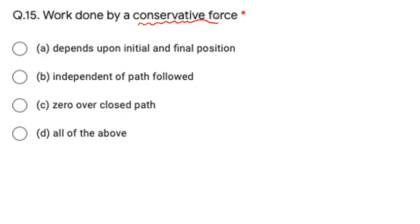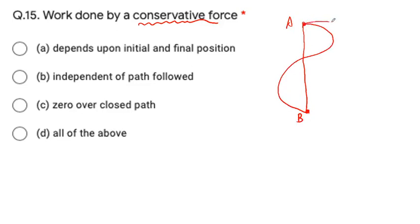The next question is: after collision two bodies stick together and move with a common velocity. This is an example of perfectly inelastic collision. In a perfectly inelastic collision, the maximum amount of kinetic energy of the system is lost.